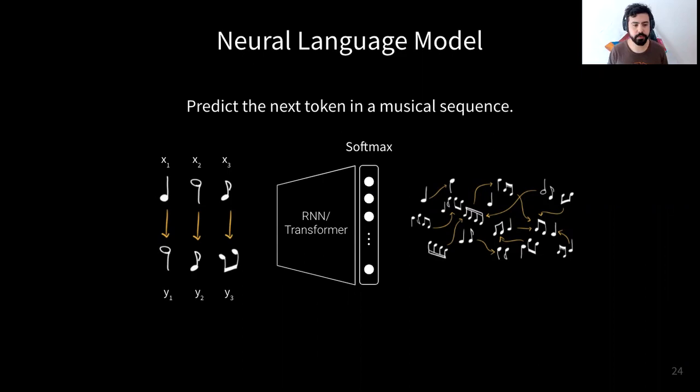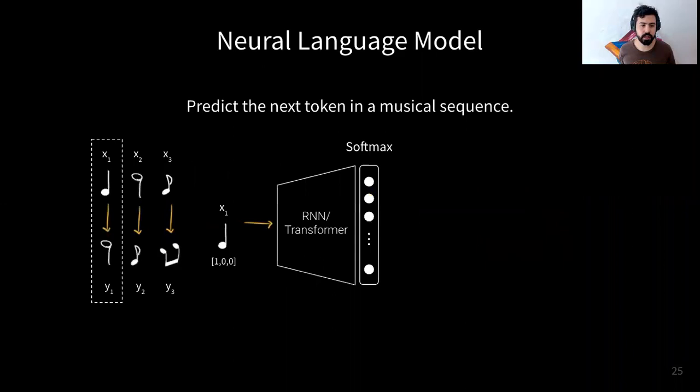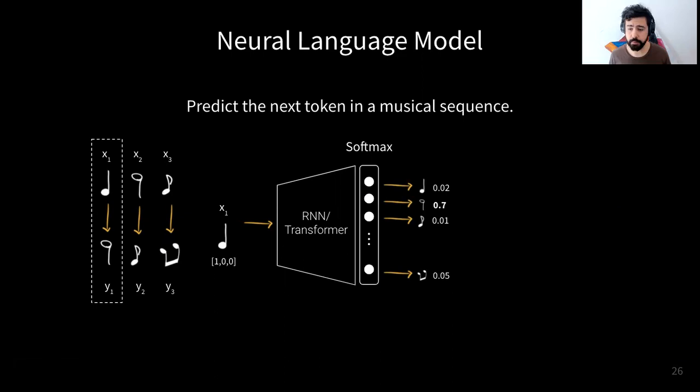Let's see with an example how we can learn to generate music with these networks. We start by processing the first example, encoded as one-hot vectors. You give that as input and the output is a probability distribution over the notes of the vocabulary. During training, you compare that with the ground truth distribution — in this case y1 — using a cross-entropy loss, which measures how close we are to the ground truth distribution.